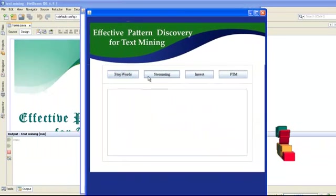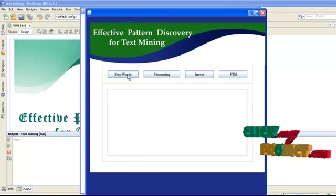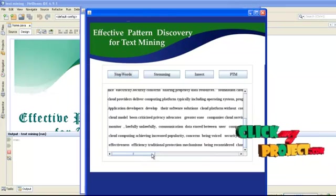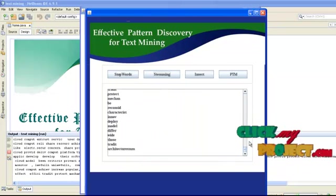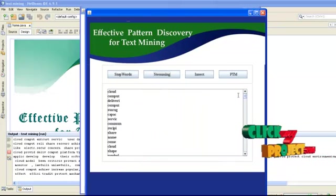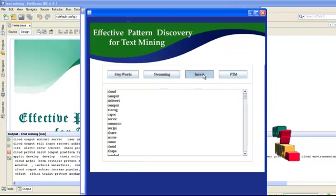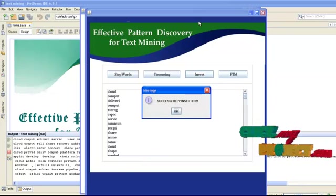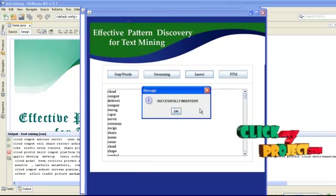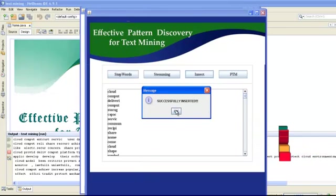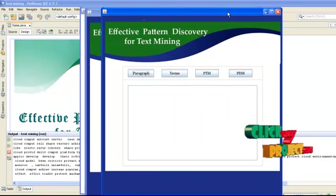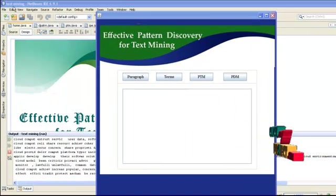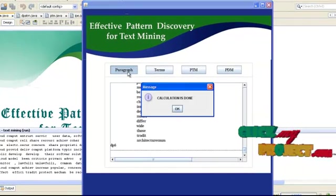Click preprocessing. Stop words and stemming processes will be done in preprocessing. Click stop words, then click stemming, then click insert. These documents are inserted into the database. Click PTM and the next form will open. In that form, click paragraph. The documents are written into paragraphs. After splitting, the calculation is done and a message is displayed.